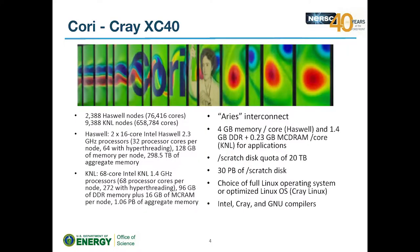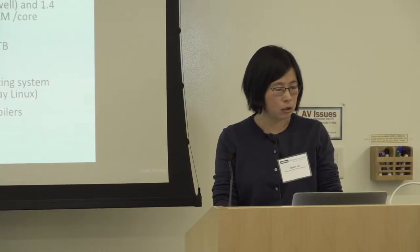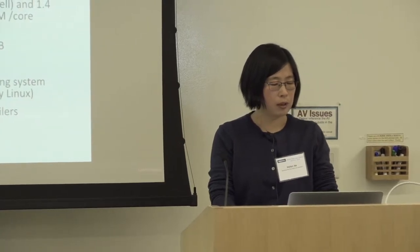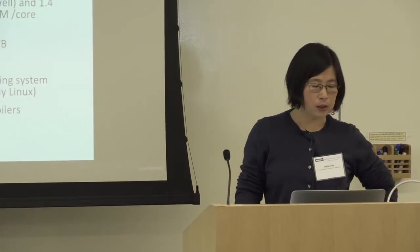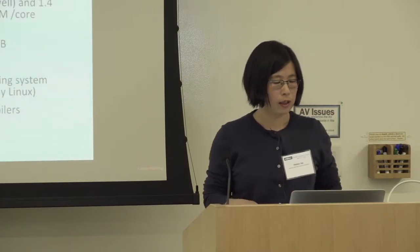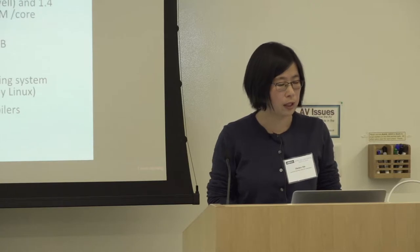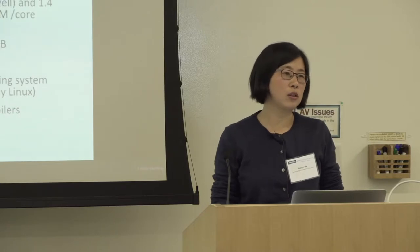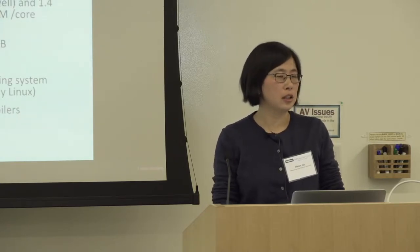Cori is an XC40 with hybrid nodes — it has Haswell nodes and KNL nodes. Haswell nodes are very similar to Edison nodes, except with 16 cores per socket. KNL nodes have 68 cores with Intel KNL Knight Landing cores. Both have hyper-threads available. On Cori KNL, per-core memory is smaller, but the total memory per node is large.